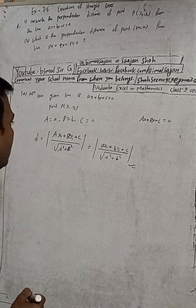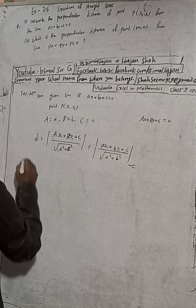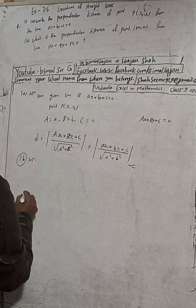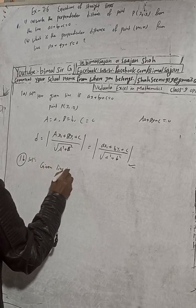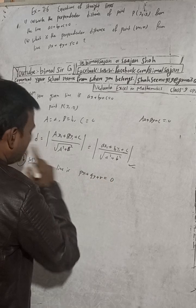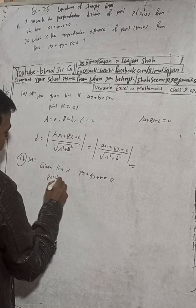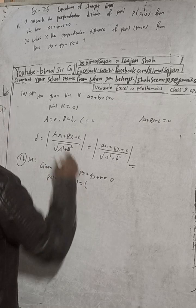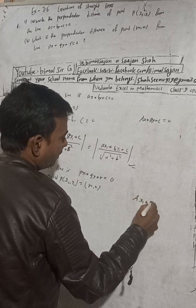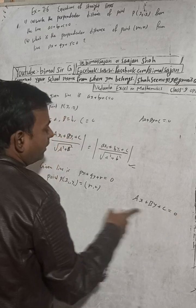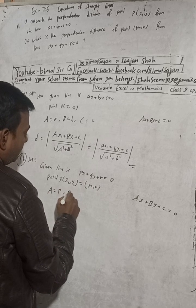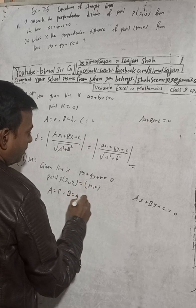Now for number one b solution: what is the perpendicular distance of the point from the line? The given line is px plus qy plus r equals zero, and the given point is (l, m). We compare this equation with the standard format ax plus by plus c equals zero. So in place of a there is p, in place of b there is q, and in place of c there is r.